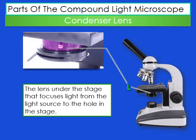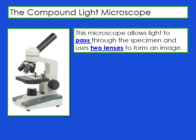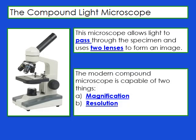The condenser lens is located under the stage and focuses light from the light source to the hole in the stage. The diaphragm contains a dial that rotates to adjust the amount of light that reaches the specimen — you can move it back and forth to control how much light comes through. The light microscope allows light to pass through the specimen and uses two lenses to form an image. The modern compound microscope has the ability to do two things: magnification and resolution.